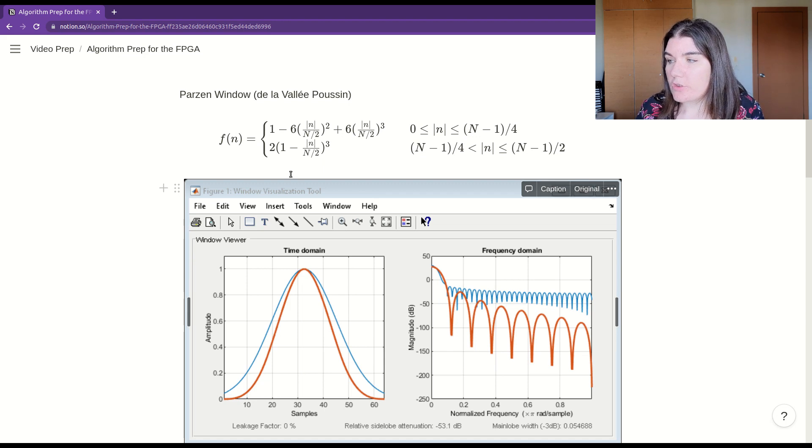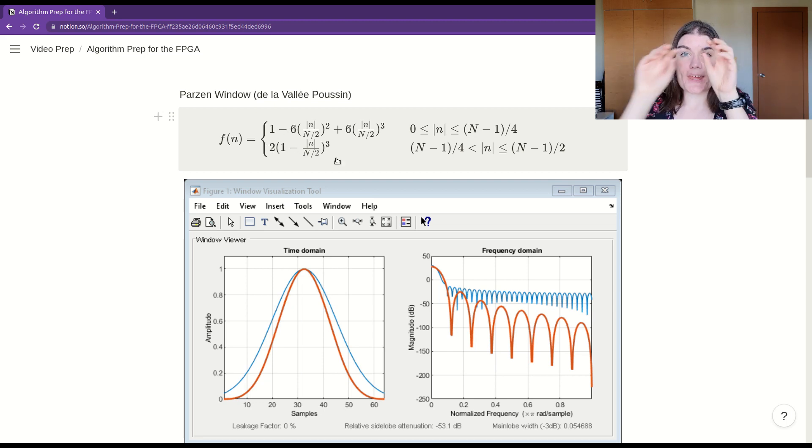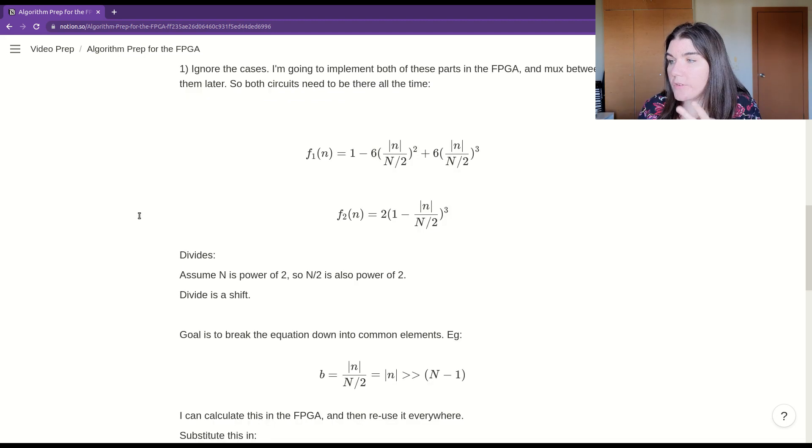This formula has two cases, depending on the n value. And I actually don't care about the cases. I can deal with the cases later. The important thing is that both of these need to be implemented in the FPGA at the same time. In parallel, side by side, there's going to be circuitry for this and circuitry for this. So the case, the first case has its own circuit, and the second case has its own circuit. And then I mux between them, depending on the n value. I'm going to be ignoring the cases and just splitting them up into one function and two functions, separate functions.